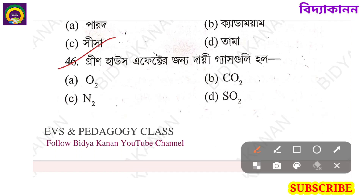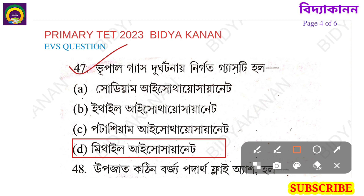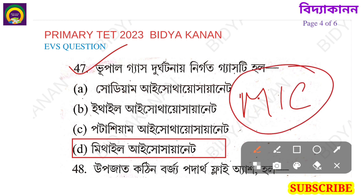The options are: sodium isothiocyanate, ethyl isothiocyanate, potassium isothiocyanate, methyl isothiocyanate. Option number D is methyl isothiocyanate, also known as MIC or MIG gas. This is related to the Bhopal gas disaster. Please comment in the comment box.